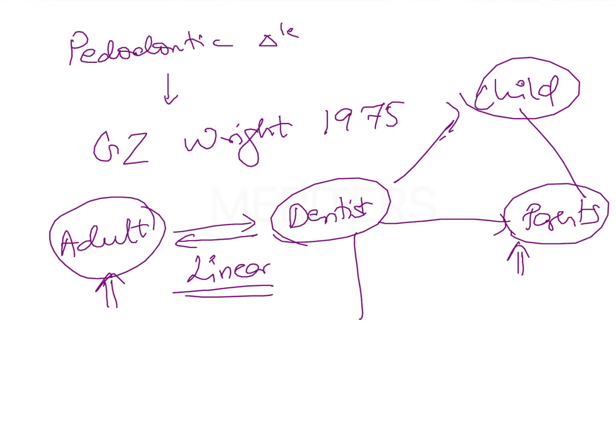This relationship is not linear. This relationship is actually a triangle, and the arrows in this triangle are working both ways, showing the communication.